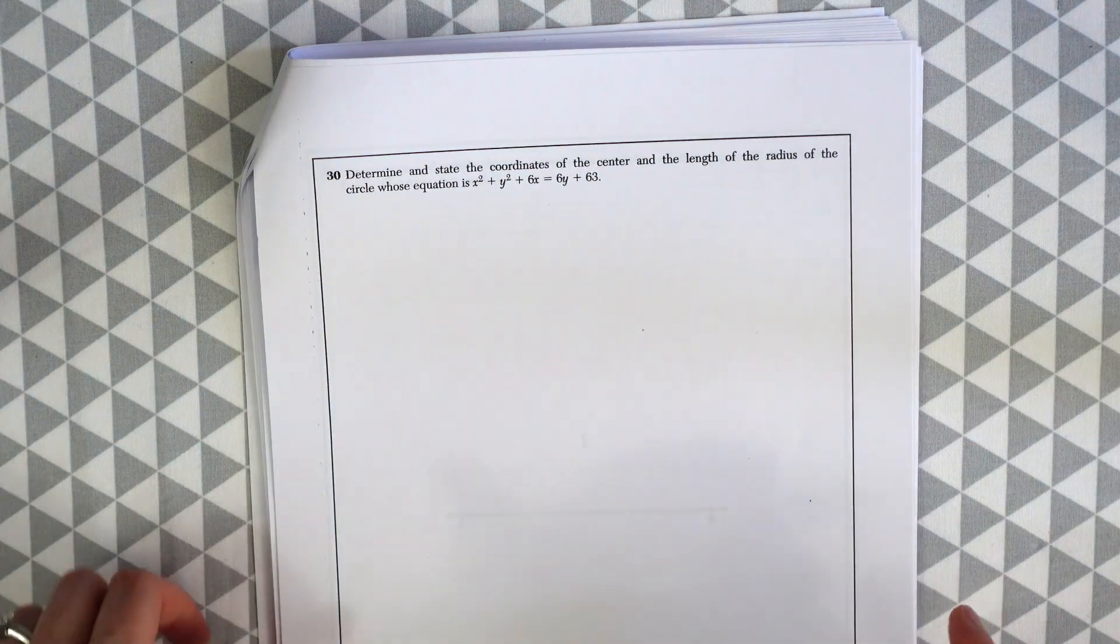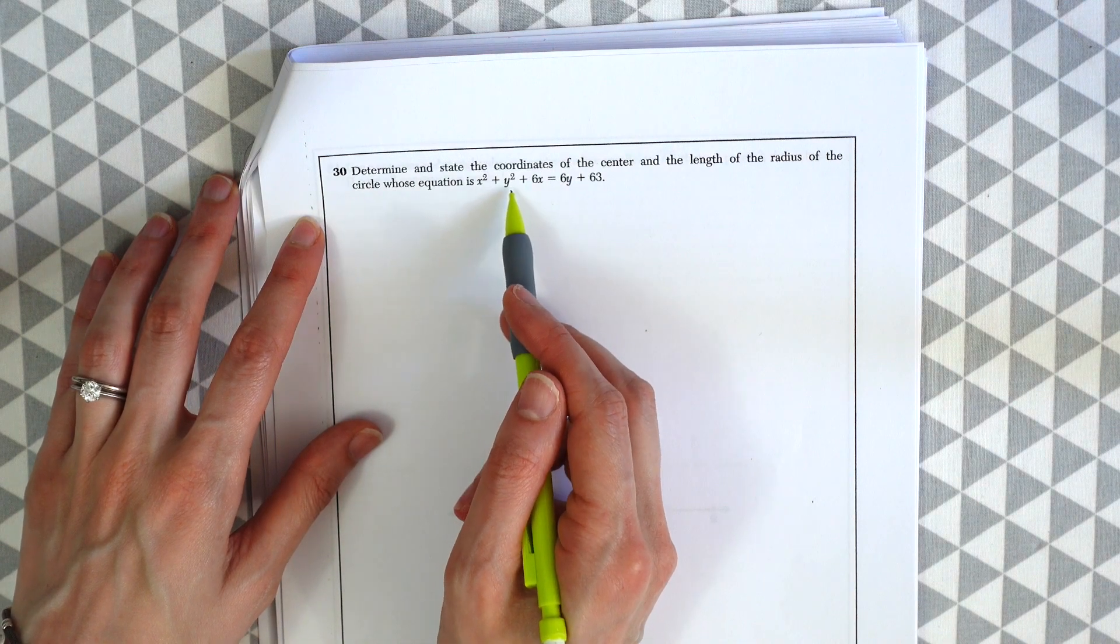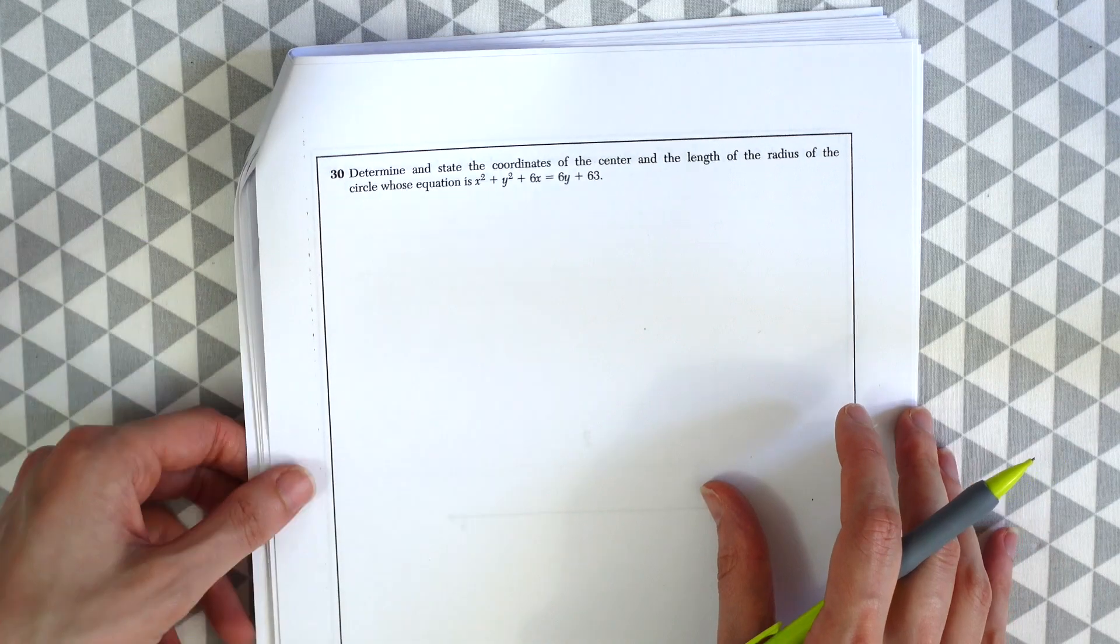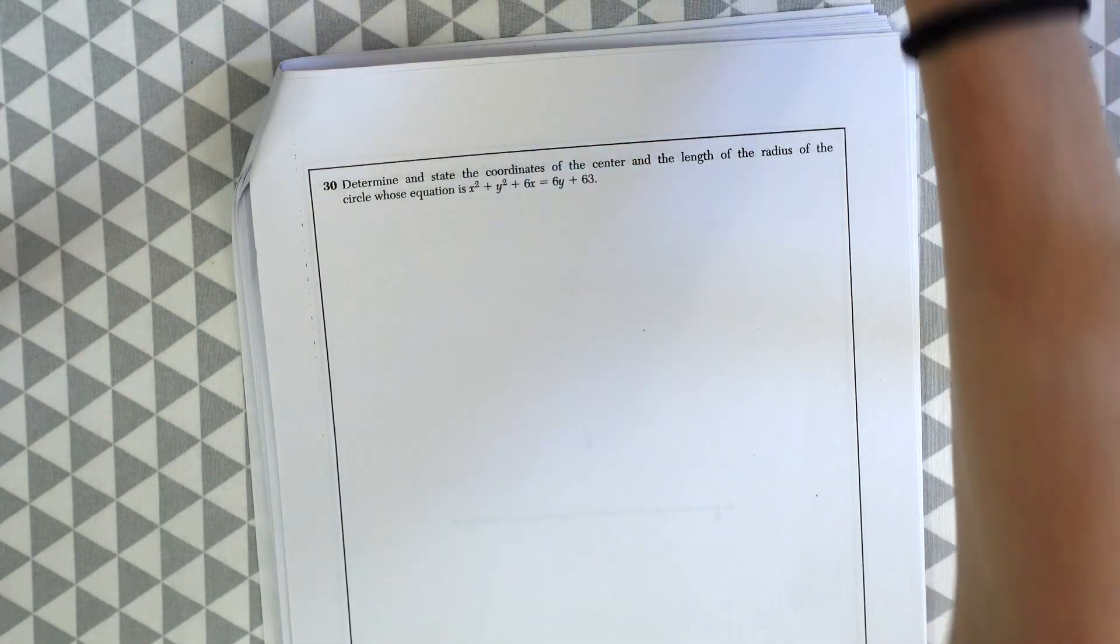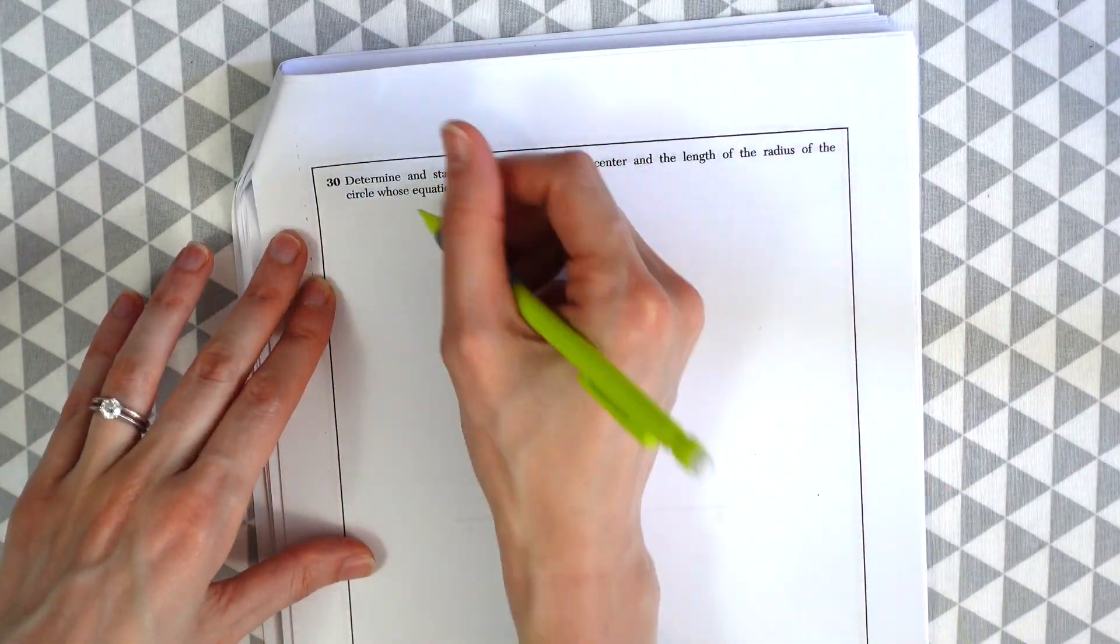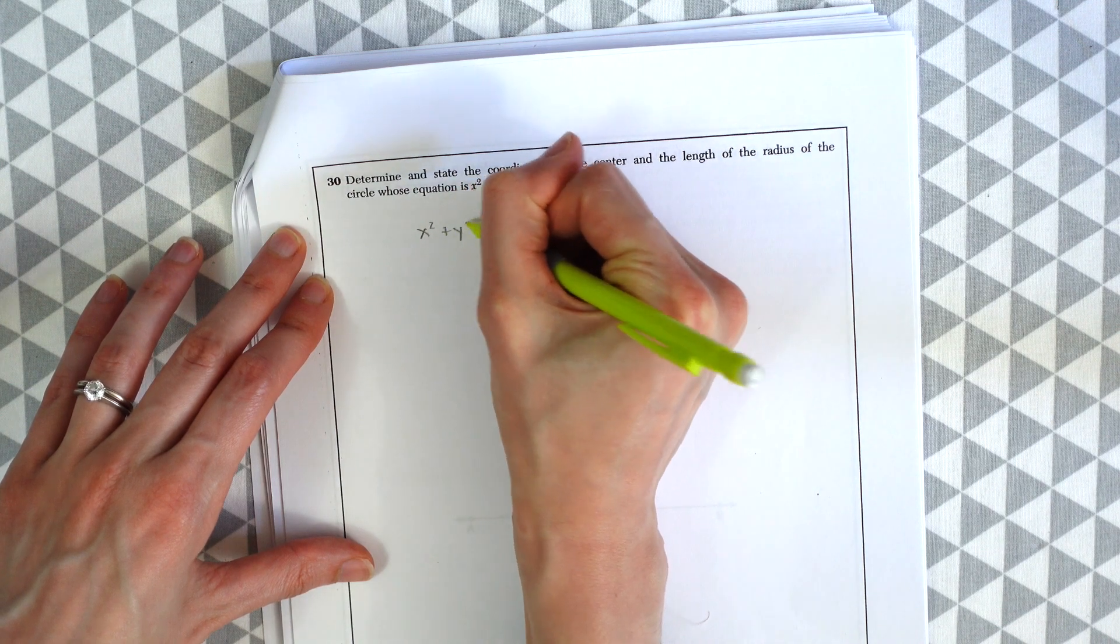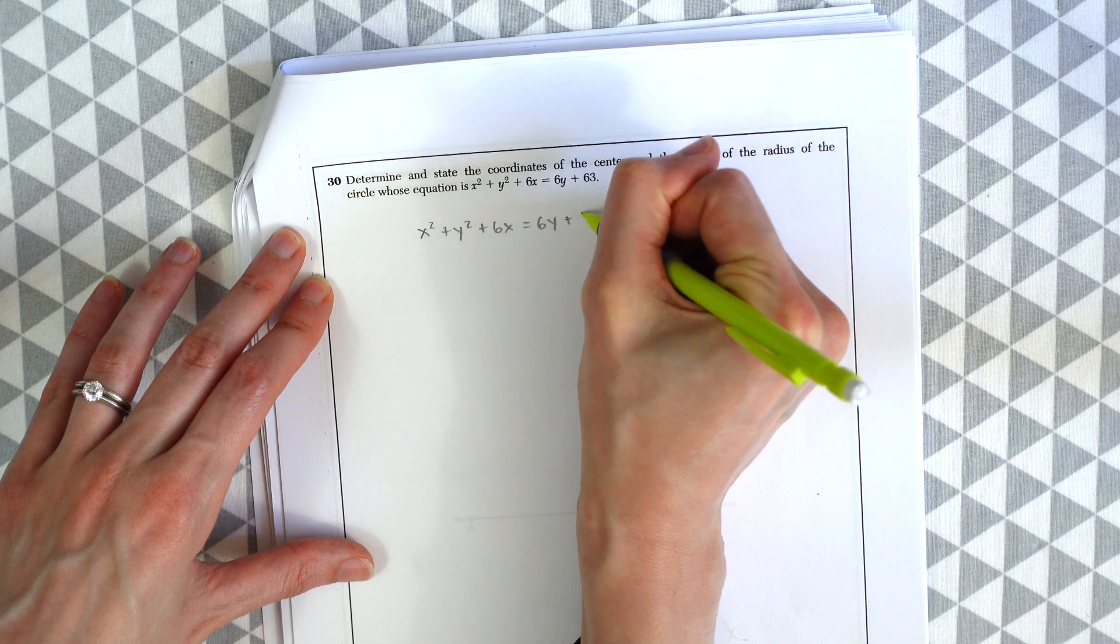Determine and state the coordinates of the center and the length of the radius of the circle whose equation is x squared plus y squared plus 6x equals 6y plus 63. So this is gonna be a little completing the square problem and then we're gonna find the center and the radius. So first let's write out our equation. So we have x squared plus y squared plus 6x equals 6y plus 63.